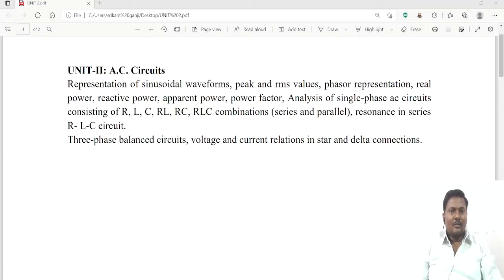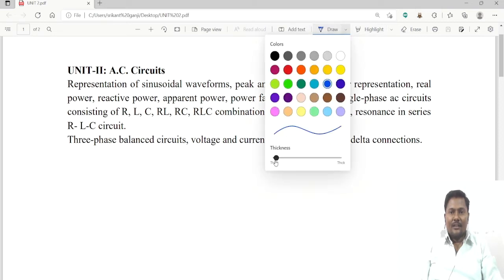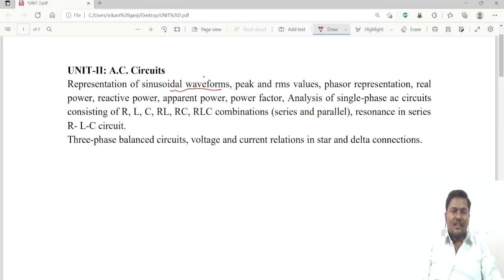Until now we studied DC circuits. Now I will give the introduction to AC circuits - AC means alternating current. In this we have representation of sinusoidal waveforms. The EMF equation or voltage equation can be written as V max sine theta or V max sine of omega t and V max sine of 2 pi by T into t.